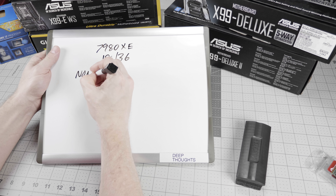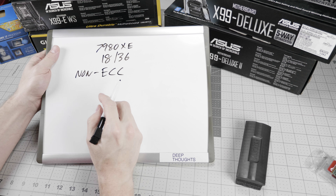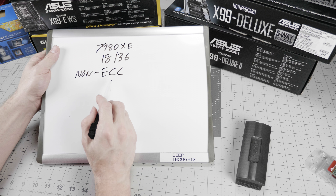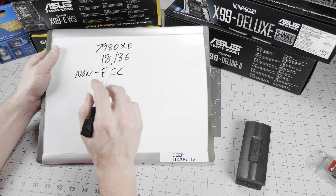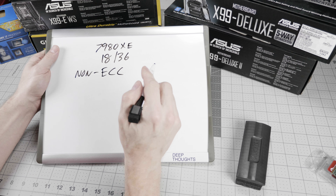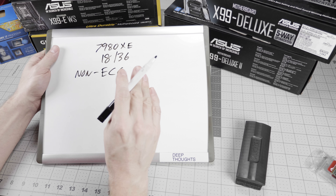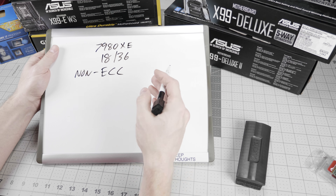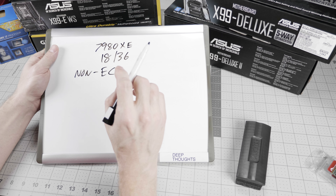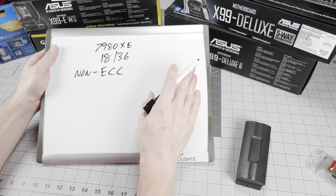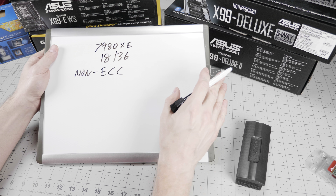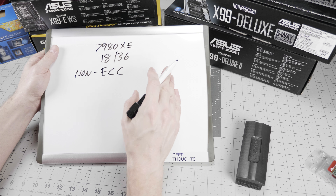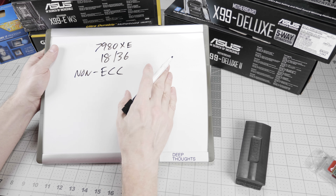This is a non-ECC platform. The memory controller on this processor does not support ECC. ECC is memory that detects and corrects bit errors. Without ECC, especially in stress situations with high heat — which is what you get using all 18 cores — if there's the slightest flaw in your memory subsystem, not just the DIMMs themselves but the motherboard and the memory controller on the CPU, you are going to get flaws in your output, and you won't know those flaws exist.